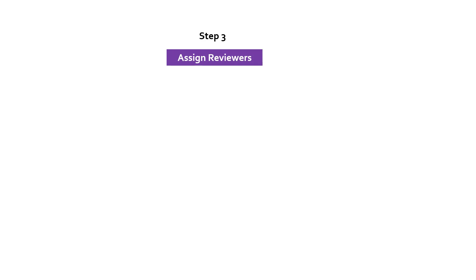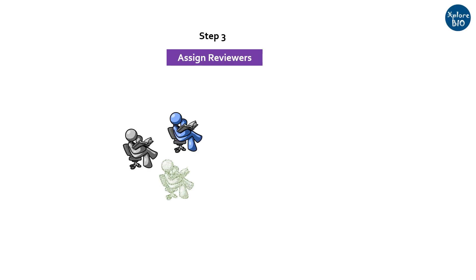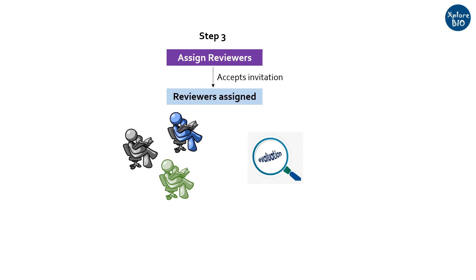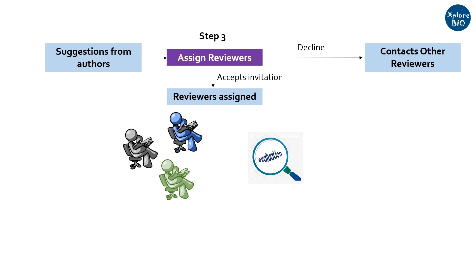If the editor finds the work suitable for the journal, it sends it ideally to two or more reviewers for critical evaluation. The reviewers may be scientists, professors, or postdoctoral researchers who have proven experience in related areas. The reviewer may or may not accept the invitation to review the paper; if they decline, the editor sends the invitation to other reviewers. During submission, the editor may ask authors for the names of a few reviewers, but it is not always necessary that those will be chosen.